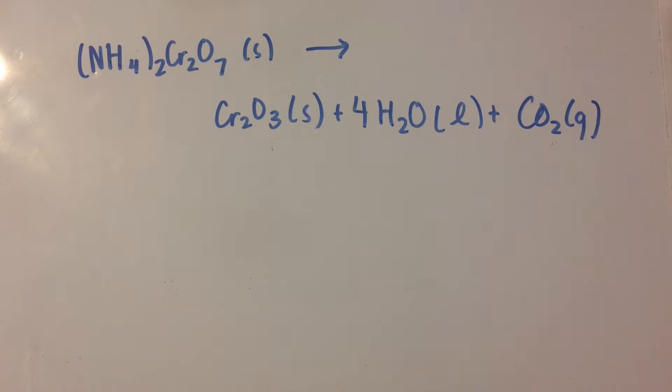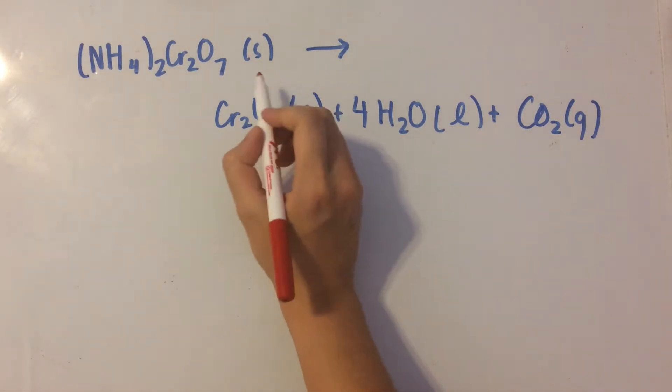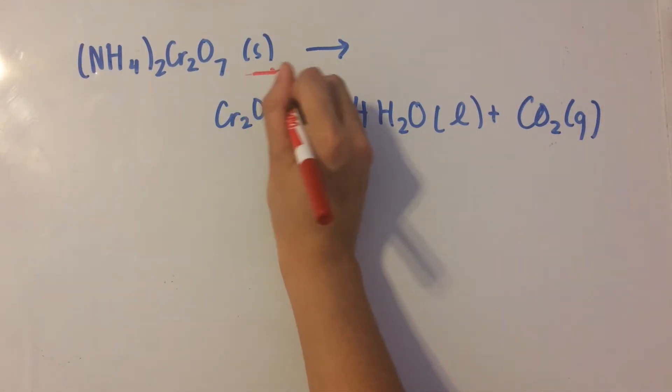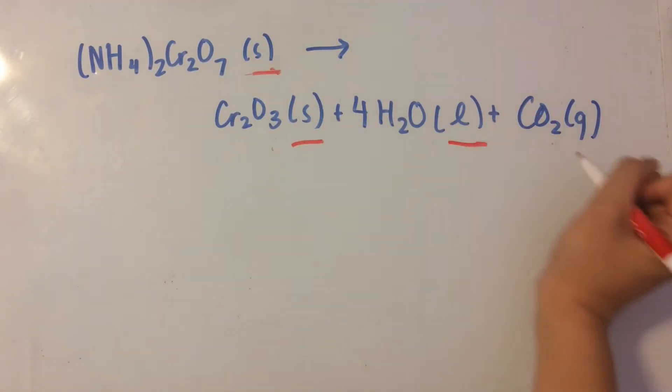So I wrote an equation here as another example of entropy, and what we have to do is determine whether entropy increases or decreases. Now, the first thing that you do is look at the states of matter that all the products and reactants are in.